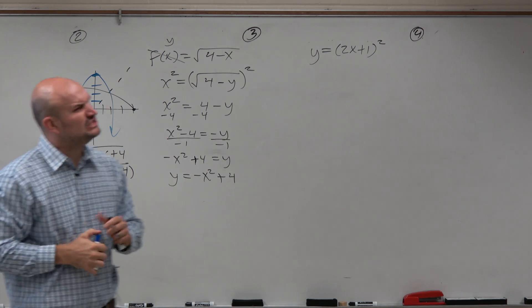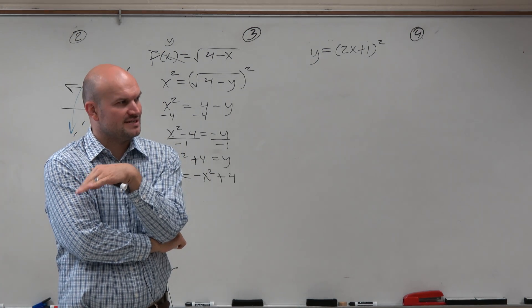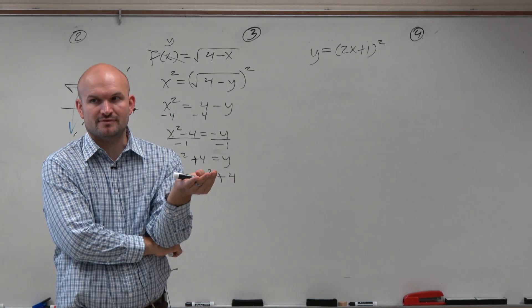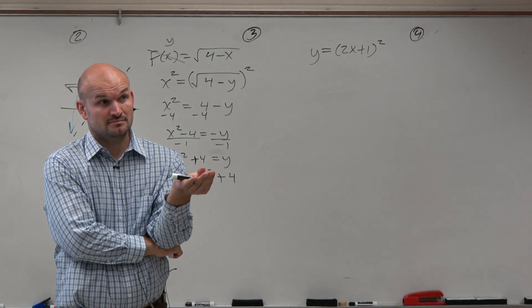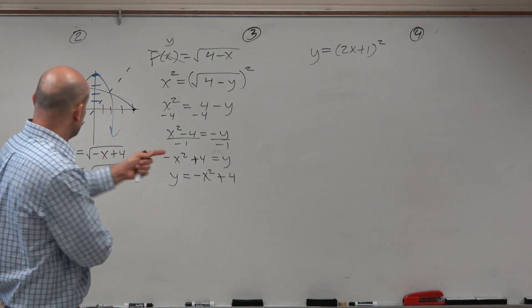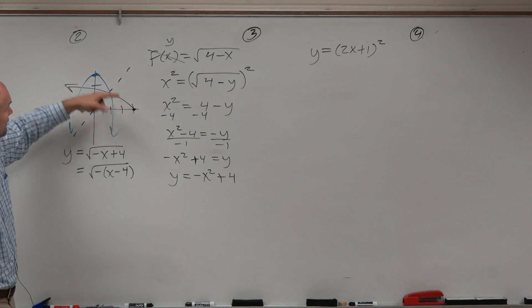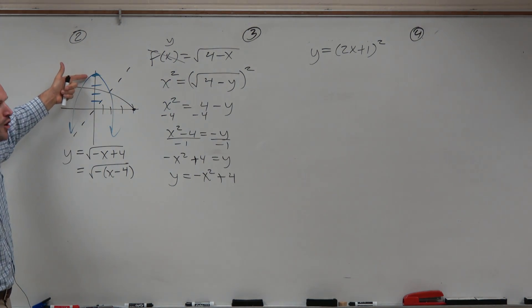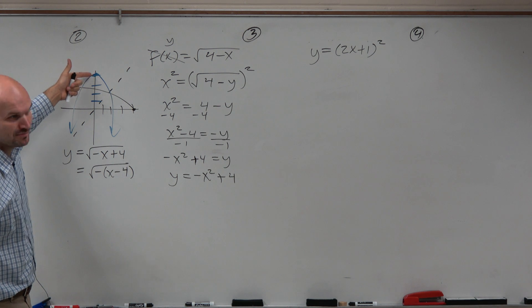And they say, ooh, something's wrong, because the black graph is not a true reflection of the blue graph. Agreed? What do you mean, sure? If you take this black graph and reflect it about the y equals x line, do you get the blue graph or a portion of the blue graph?